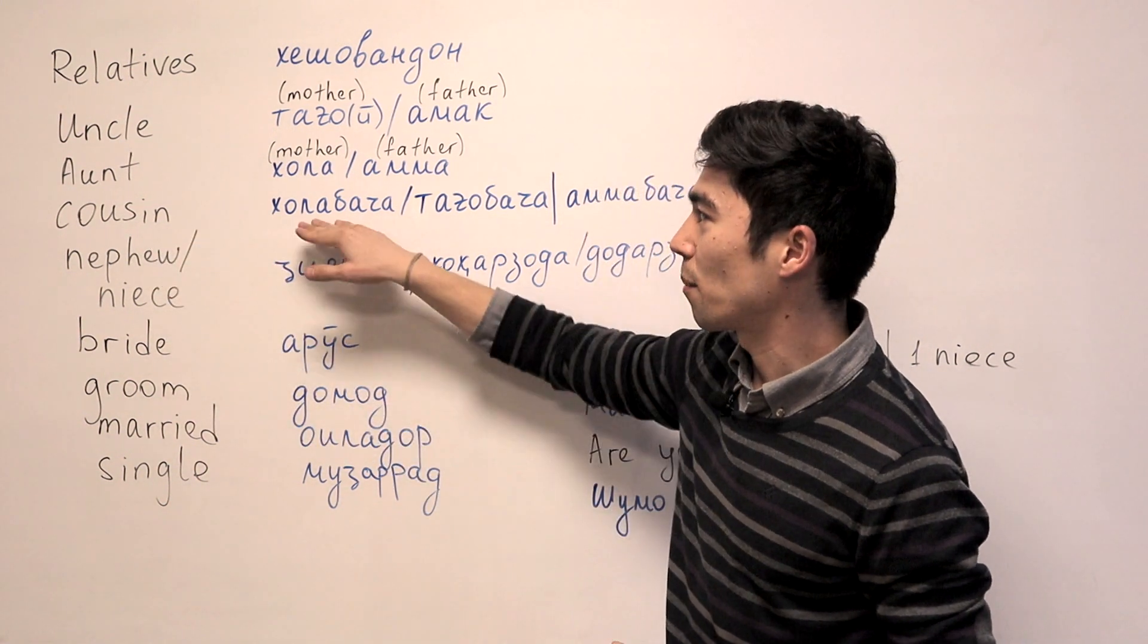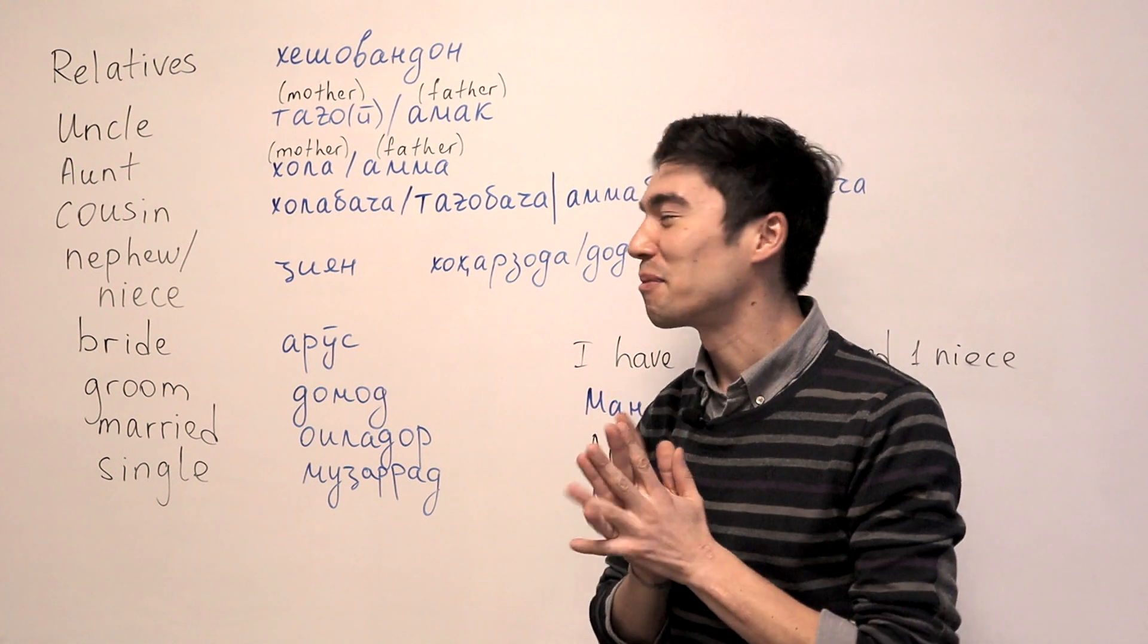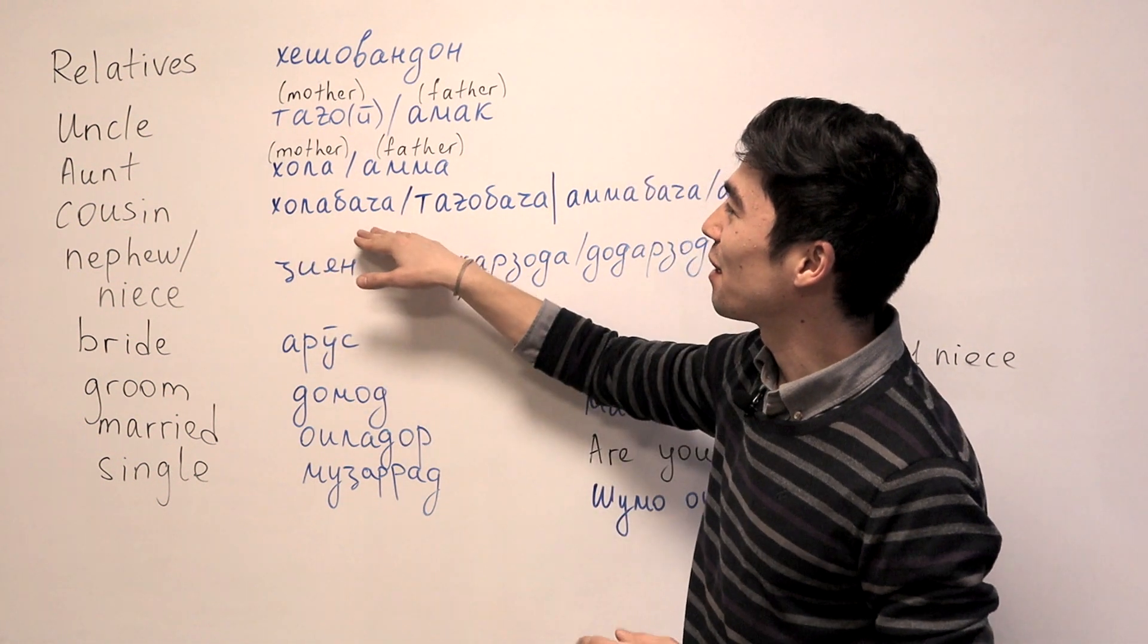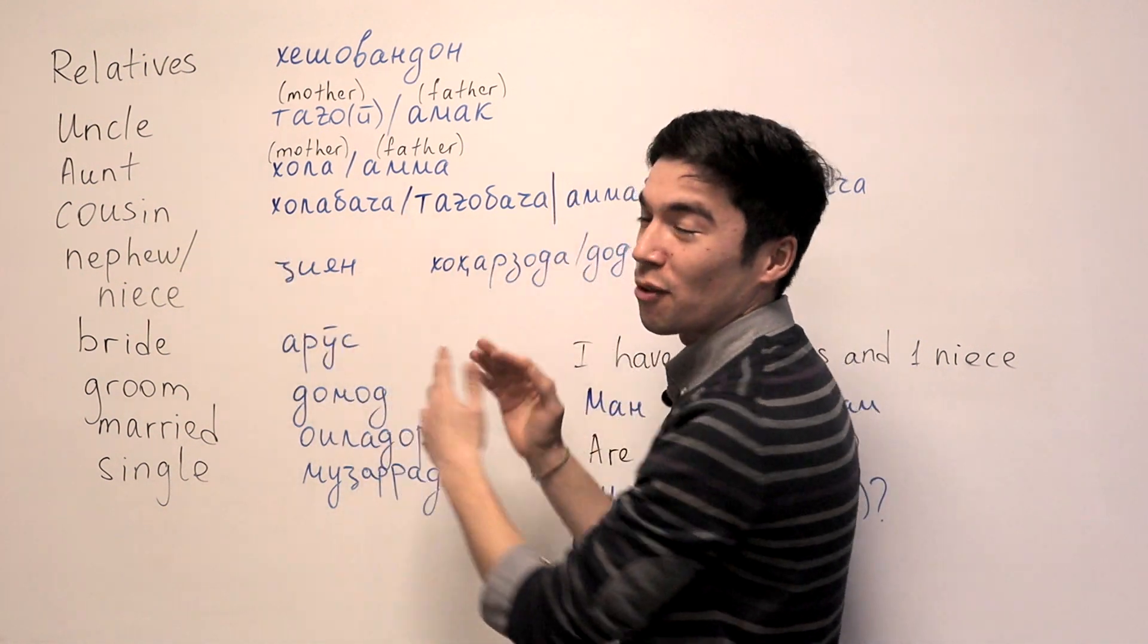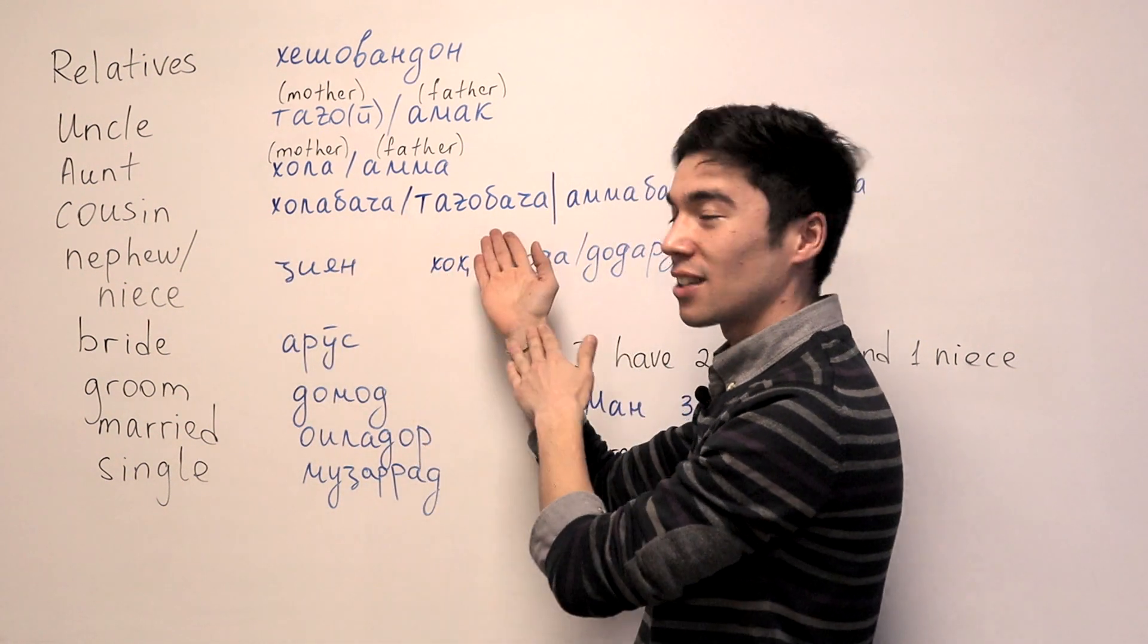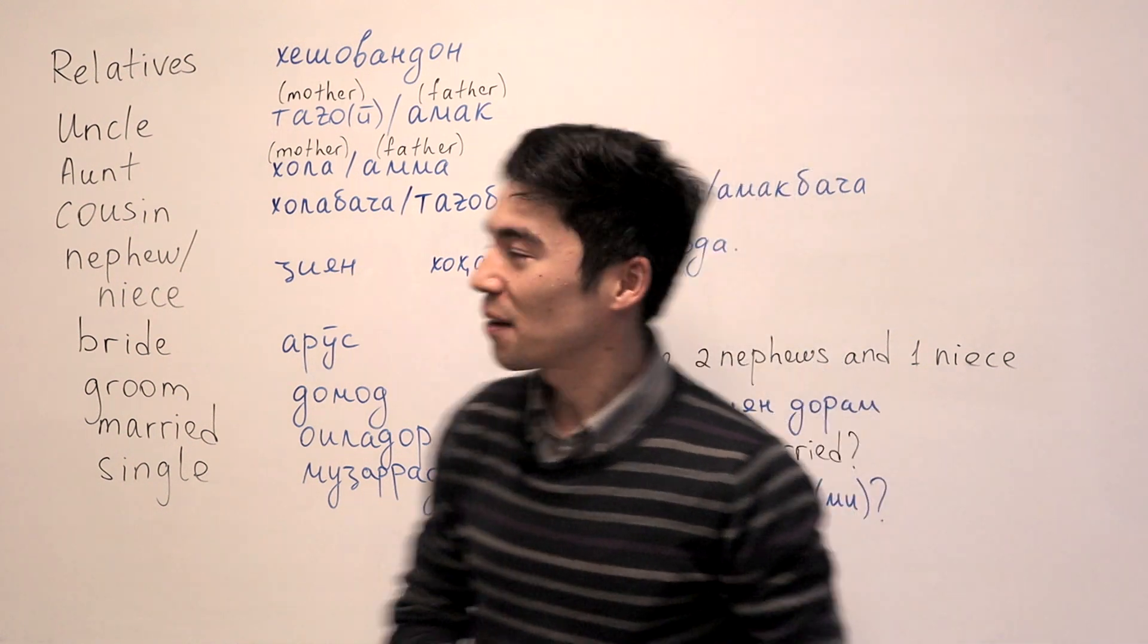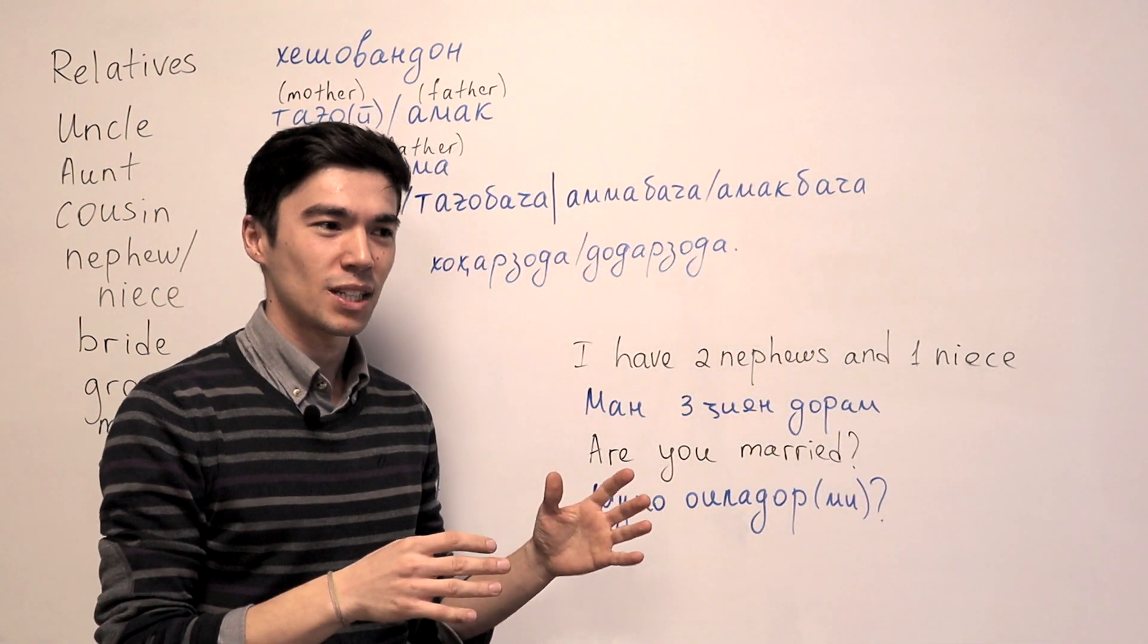And cousin, Khola Baccha. Again, complicated. Khola Baccha will be from the mother's side. Taho Baccha as well. So these two, from the mother's side. Khola Baccha, Taho Baccha. Baccha means like kid.